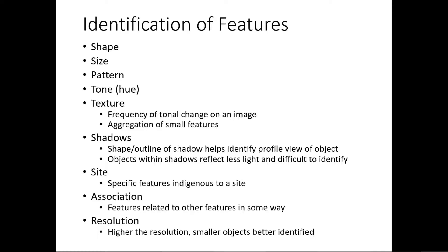The next parameter is resolution. Higher resolution means smaller objects can be identified. Spatial resolution refers to how clearly an object is visible in a single pixel — the better the resolution, the smaller the objects that can be detected. Resolution plays a very important role in identifying features.